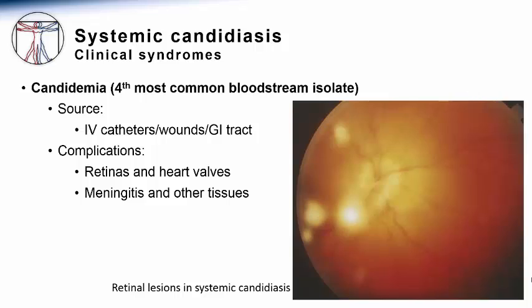Although candida species can cause meningitis as a complication of bloodstream infection, this typically occurs in neonates or other patients who do not have an intact or fully mature blood-brain barrier. Unlike primary neuropathogens such as Cryptococcus neoformans or Neisseria meningitidis, candida does not appear to have a major tropism for the central nervous system.